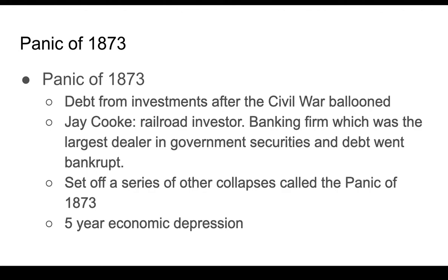But too many people took on more debt than they should have, and eventually all this debt led to bankruptcy. One man in particular, Jay Cooke, invested heavily in railroads, and his firm also dealt largely in government securities and government debt. They went bankrupt, which caused a panic when a lot of government money was no longer available. People began to panic, many began trying to sell off their assets or collect their debts, and when people couldn't afford to pay, it led to the widespread economic collapse called the Panic of 1873.